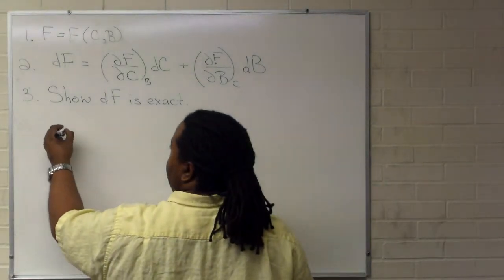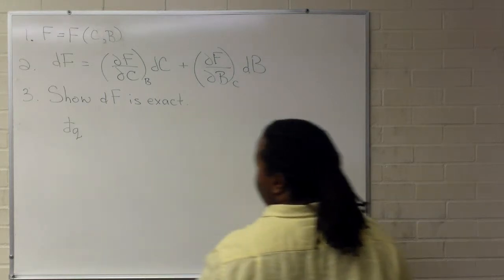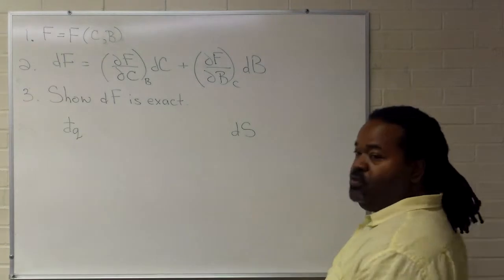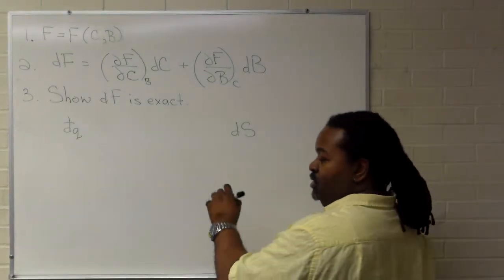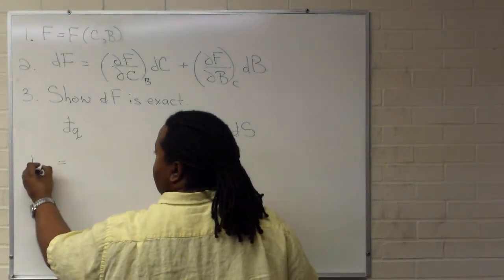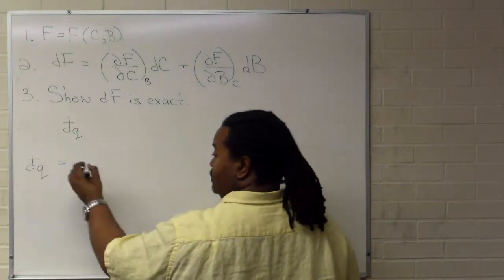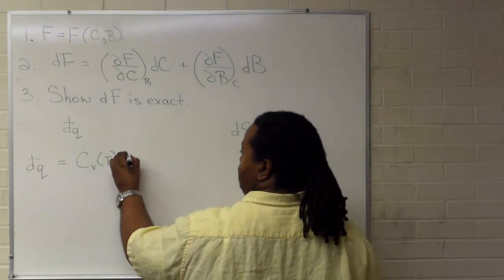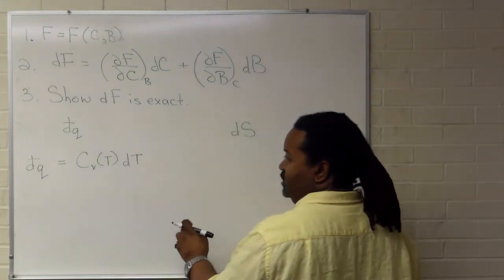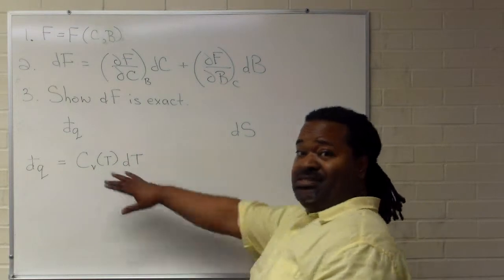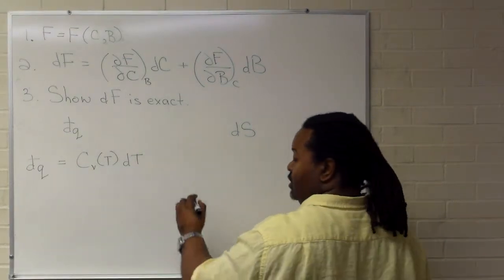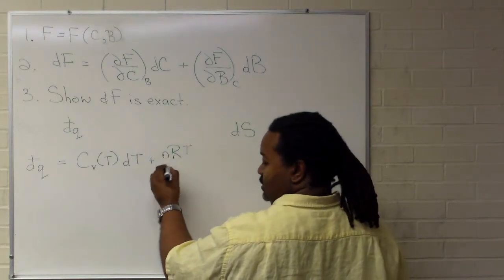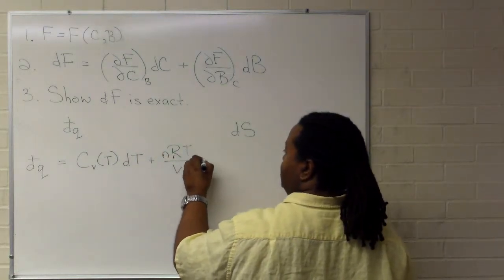As an example, we can compare the inexact differential for dq versus the exact differential for entropy. In this case, what we have is that dq is a heat capacity function only in terms of temperature, dt. So this part is exact, but then because we have pdv, if we substitute in our nRT over v, dv,